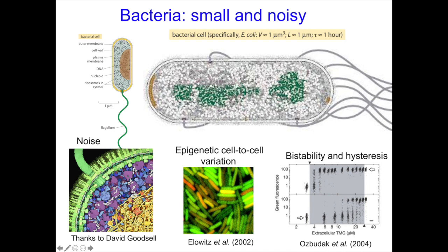Because of their small size, there's a lot of variability and noise — mainly because there are small numbers of molecules in the cell reacting randomly. Variability can be so large that individuals in isogenetic populations do very different things from one another. These are identical twins but they express different proteins — this is called epigenetic variability. The variability can be strong enough that a cell population can be in two different states depending on history, showing bistability and hysteresis — very well known from physics. These are simple ways for bacteria to specialize and form different subpopulations.